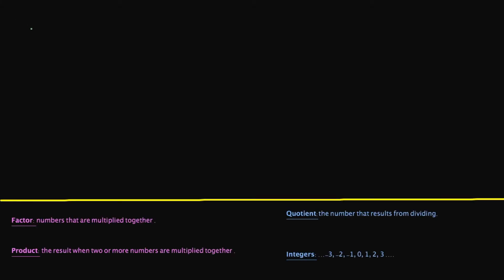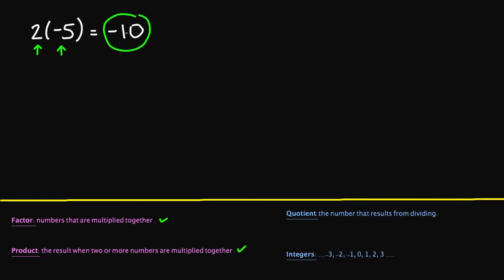So let's say for an example, we had to multiply 2 times negative 5. 2 times negative 5 is going to give us negative 10. But before we do that, let's look at some definitions so that we can be familiar with when we are multiplying our integers. So remember that factors are numbers that are multiplied together. So in this example, my 2 is a factor and then my negative 5 is a factor. The product is the result when two or more numbers are multiplied together — it's going to be your negative 10. Negative 10 is your product.